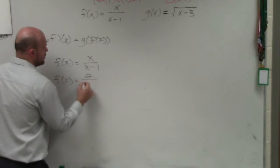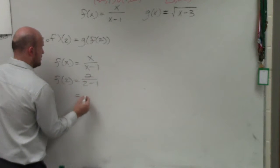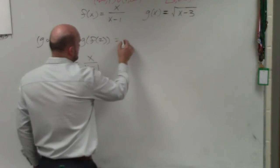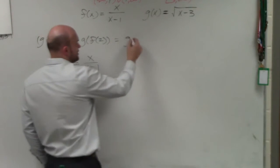f of 2 is 2 over 2 minus 1, which equals 2 over 1, which equals 2. So therefore, technically, f of 2 is the same thing as just 2.